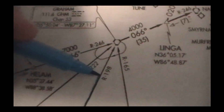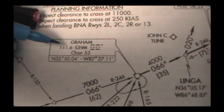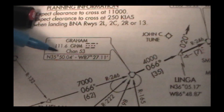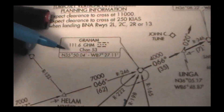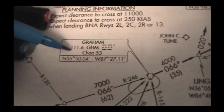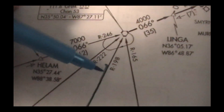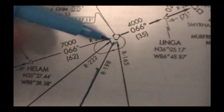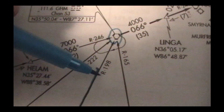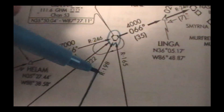This is the Gram VOR. While we're heading towards Gram, we're going to be intercepting the 111.6 Gram VOR on the 198 radial, which is basically coming in from the south.